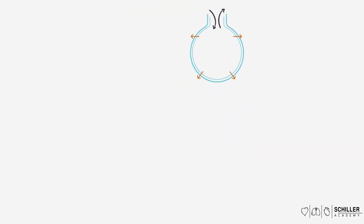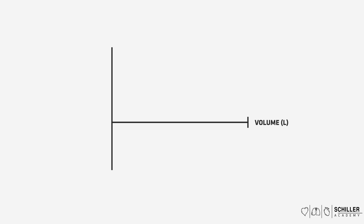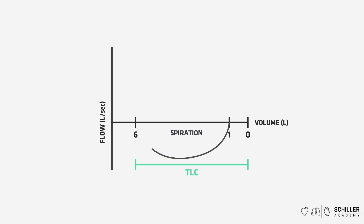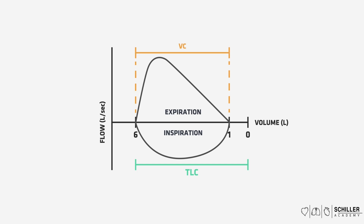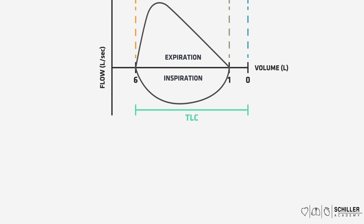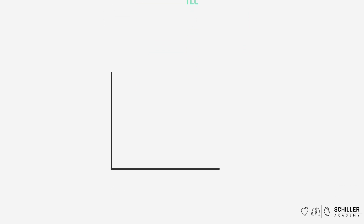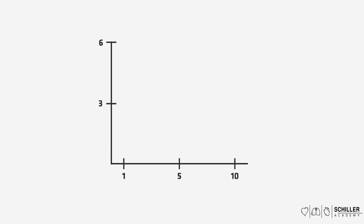Let us draw this in a graph of normal lung function. Here, we have the volume on the x-axis and flow through the lung on the y-axis. A normal adult man has a total lung capacity of about 6 liters, so the volume is set at 6. Imagine taking a maximally deep breath in, and then exhaling as forcefully and as quickly as possible — this is the vital capacity or forced vital capacity. Thus, the remaining air in the lungs after a maximal expiration is the residual volume. We can also look at the forced vital capacity on a different graph by introducing time.